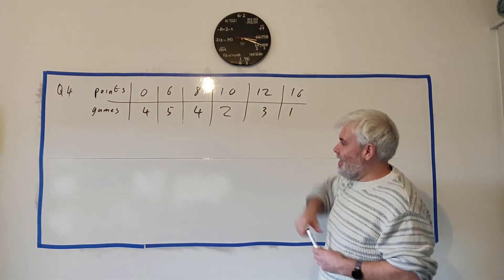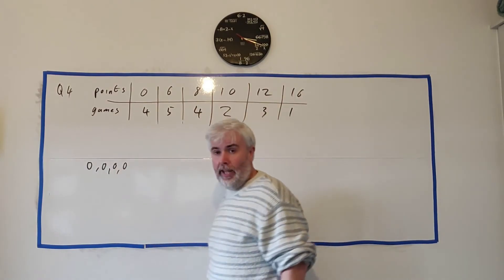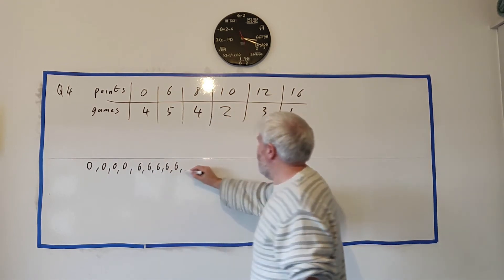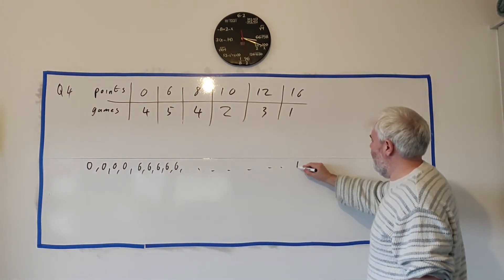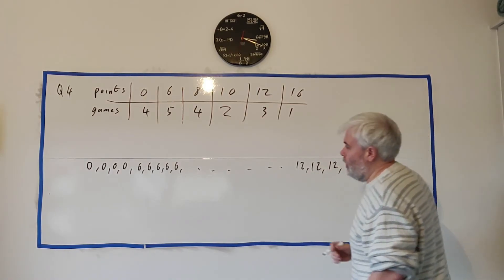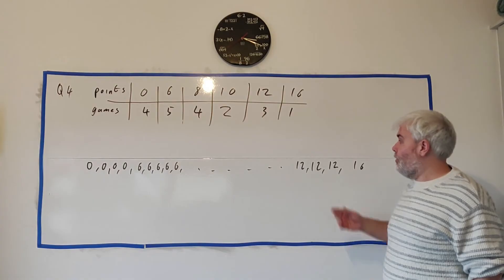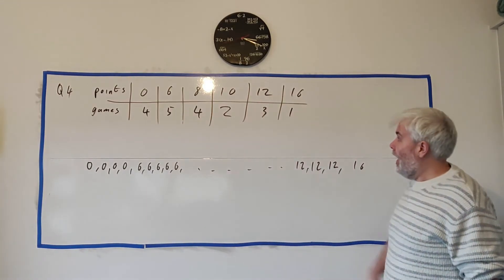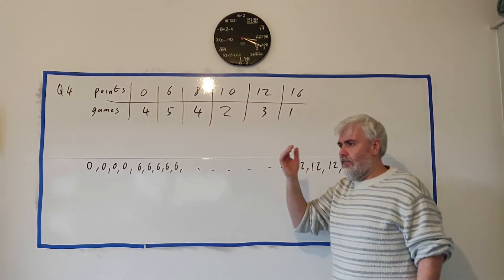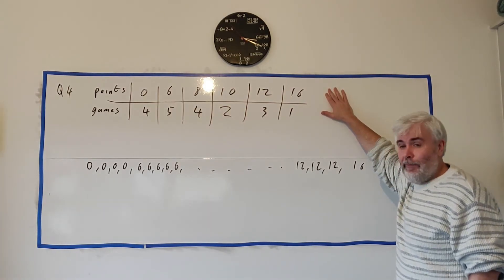What this table is actually showing us is that in 4 games, he scored 0. So there was 4 games, he scored 0. There was 5 games that he scored 6. And so on. All the way down to 3 games that he scored 12 and 1 game that he scored 16. These are the numbers you would have to add up and divide by the total here to get the mean. And they very often give you a question in this frequency table. But it's very common to give you information like this.